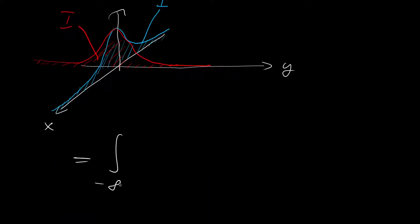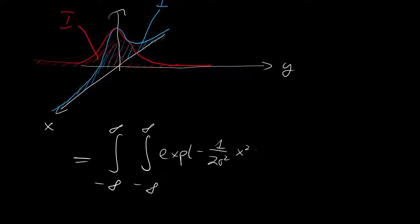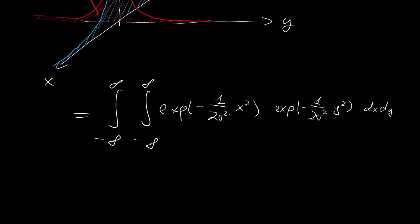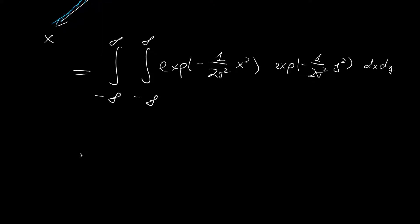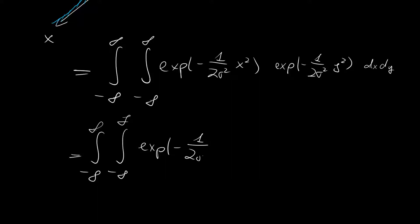So I squared is the double integral from minus infinity to plus infinity over the exponential of minus 1 over 2 sigma squared times x squared, times the exponential of minus 1 over 2 sigma squared times y squared, dx dy. Using exponential rules — when we multiply exponentials with the same base e, we add the exponents — we get the double integral of the exponential of minus 1 over 2 sigma squared times, in brackets, x squared plus y squared, dx dy.